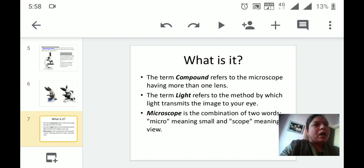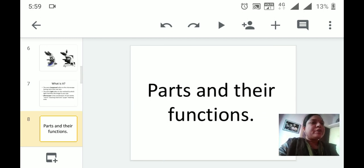What exactly is it? The term 'compound' refers to the microscope having more than one lens. The term 'light' refers to the method by which light transmits the image to your eye. Microscope is a combination of two words: 'micro' meaning small and 'scope' meaning view.